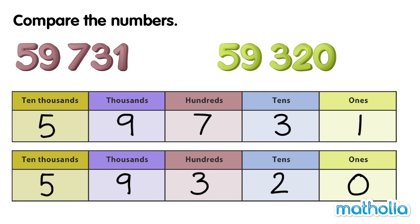Start by comparing the digits in the highest place value. Let's look at the digits in the 10,000s place. 5 and 5 — both numbers have 5 ten-thousands. So, we move on to compare the next highest place.